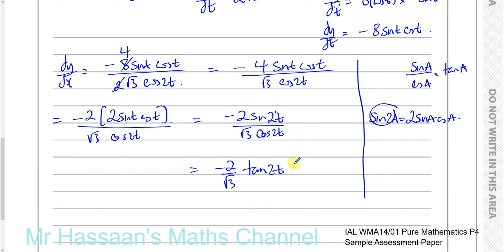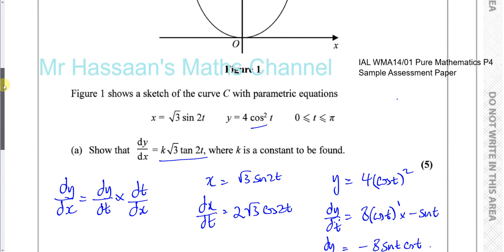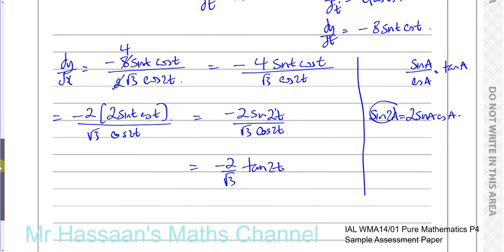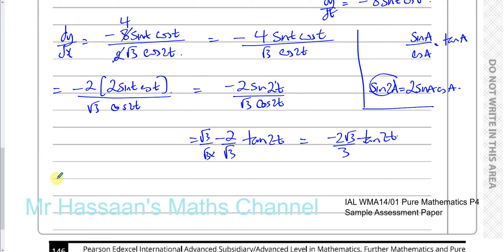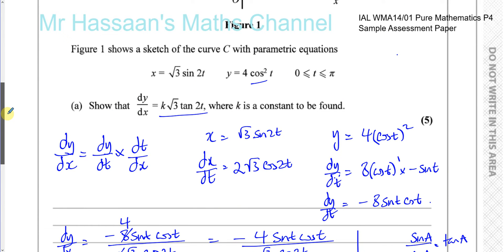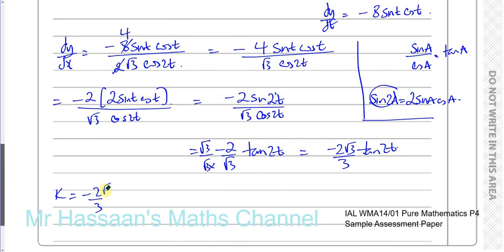The denominator needs to be rationalized, so we multiply by root 3 over root 3. That gives minus 2 root 3 over 3 times tan 2t. So k equals minus 2 over 3. The answer is in the form k root 3 times tan 2t, where k equals minus 2 over 3. That's how you differentiate that function.